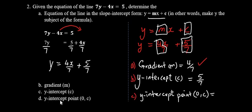And last, our y-intercept point, 0 comma c, is actually 0 and the c value being 5 over 7.